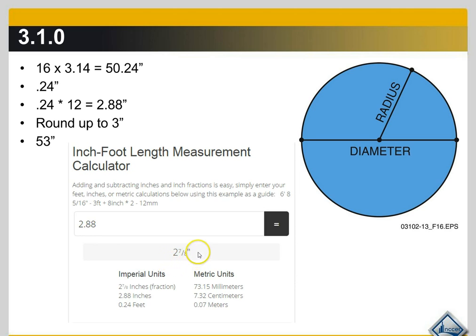And you end up with 2 and 7 eighths inches to be exact. But I mean, what's an eighth of an inch? We just round up to 3 and we're good to go when we're talking about wrapping ductwork. Alright, just make sure you know all of your key terms in the chapter and that you can identify hexagons and pentagons and so forth.